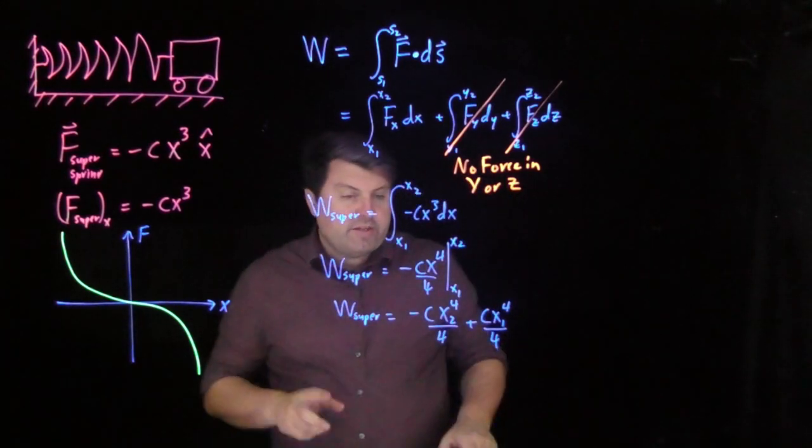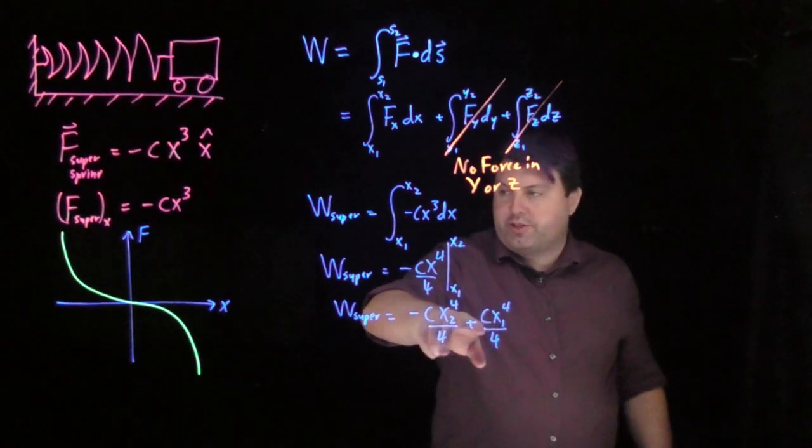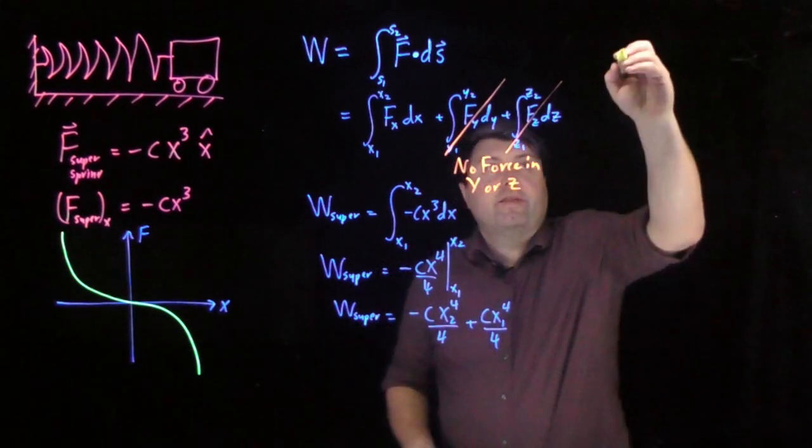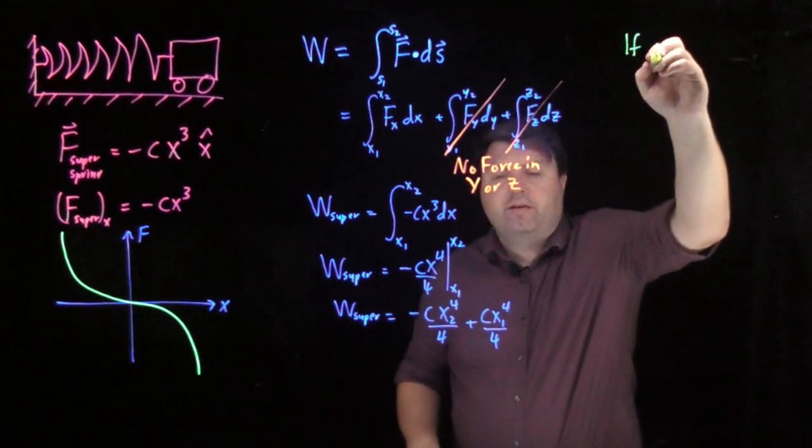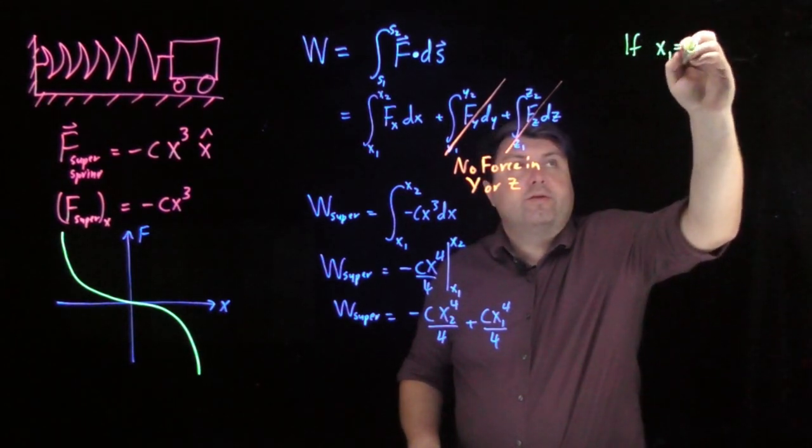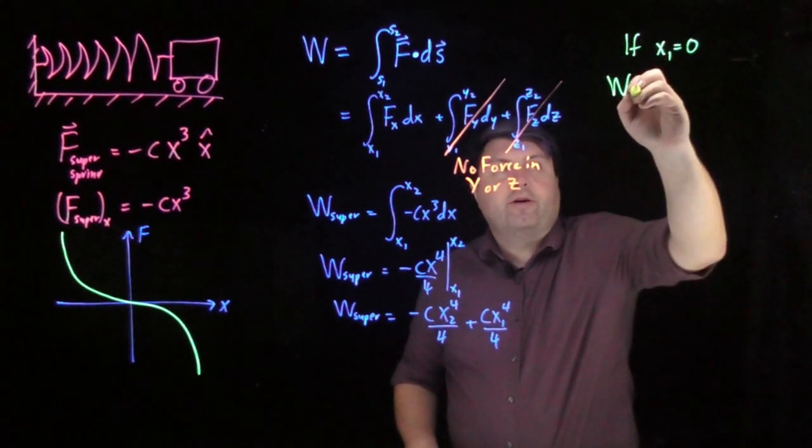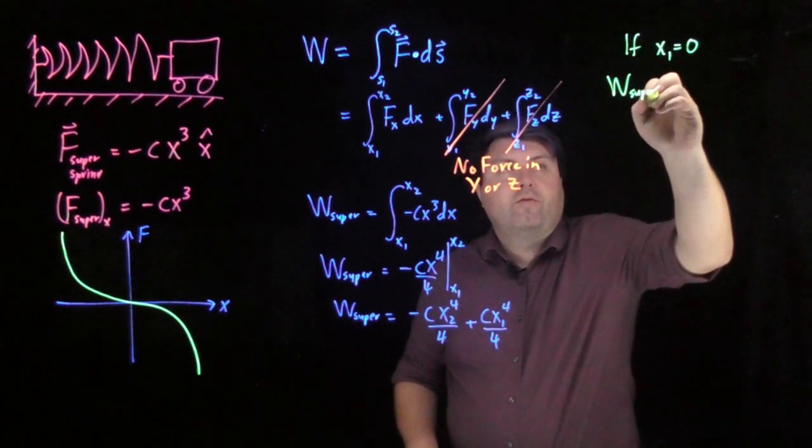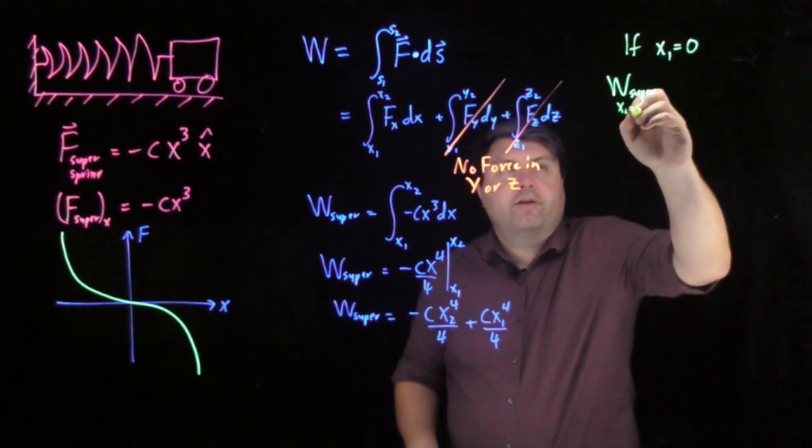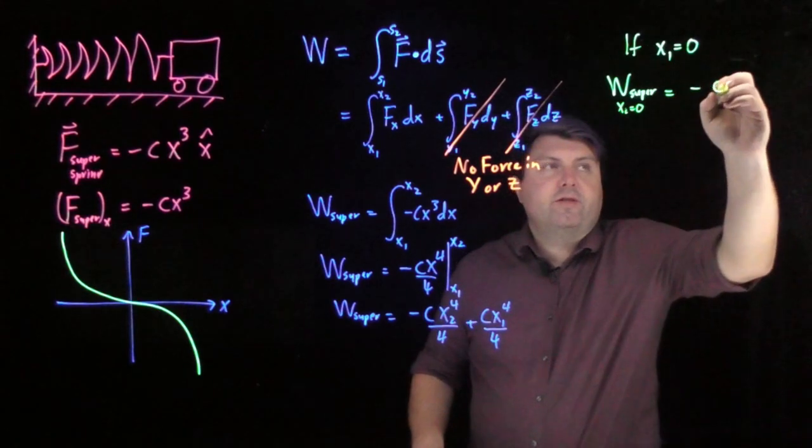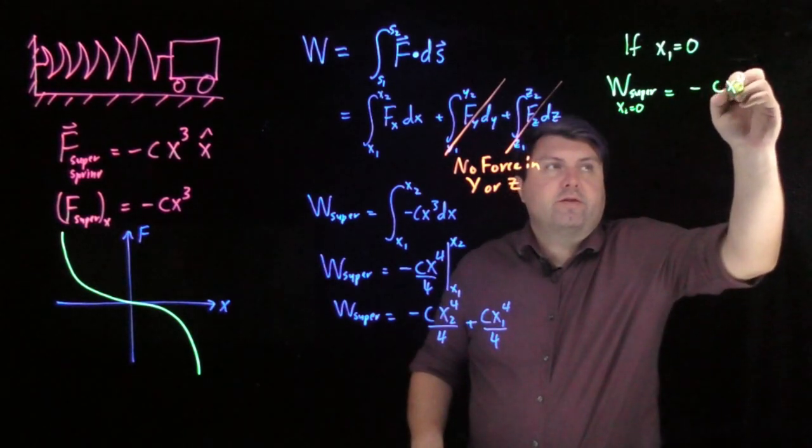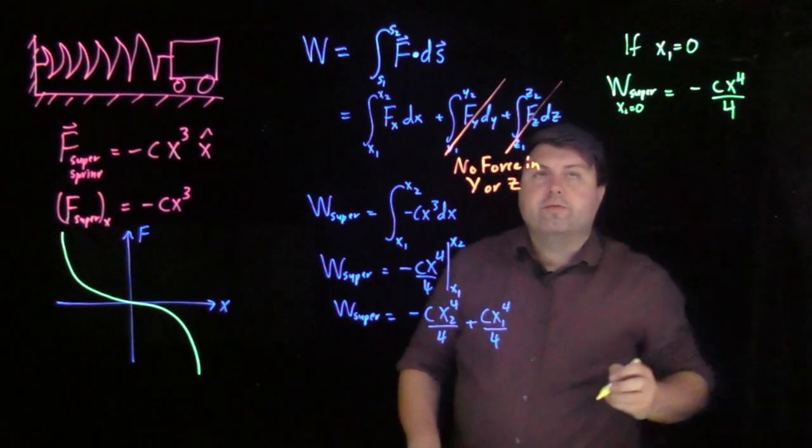So we can say, if we want our initial position to be zero, that if x₁ equals zero, then our work for our super spring when x initial equals zero is negative cx⁴ over four.